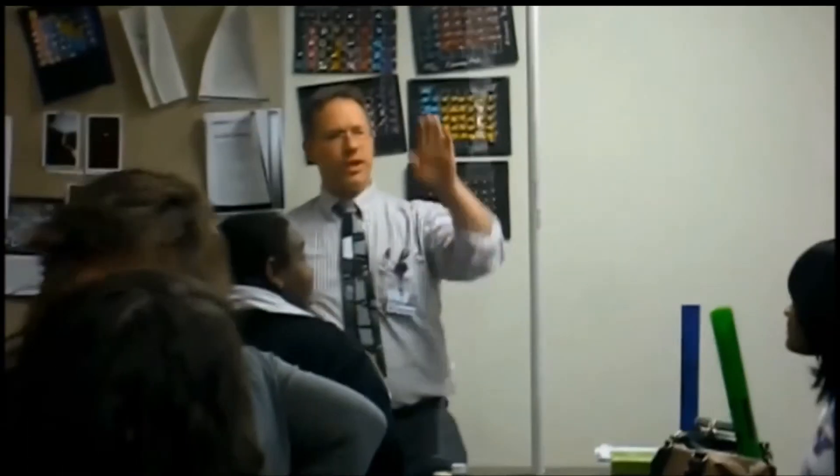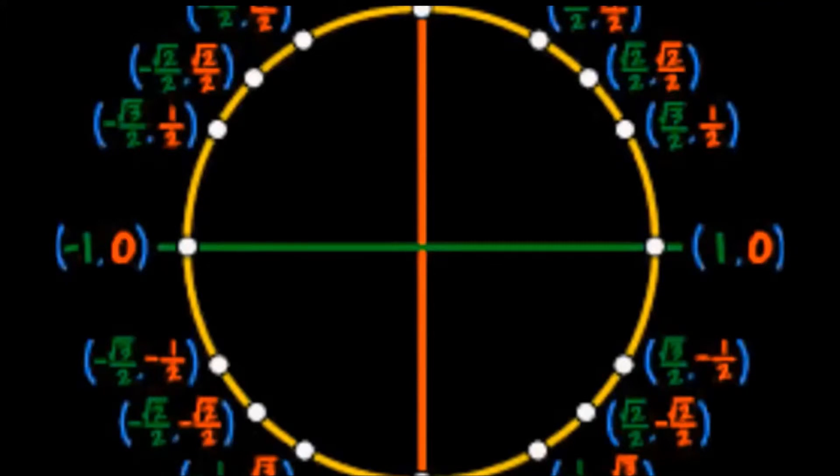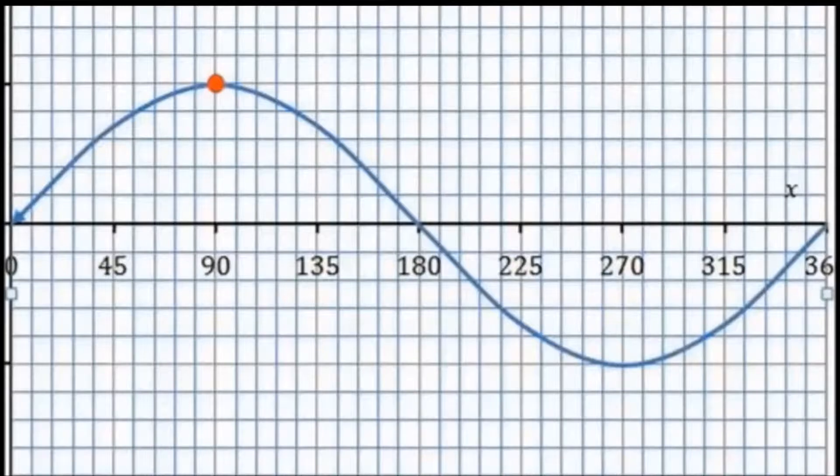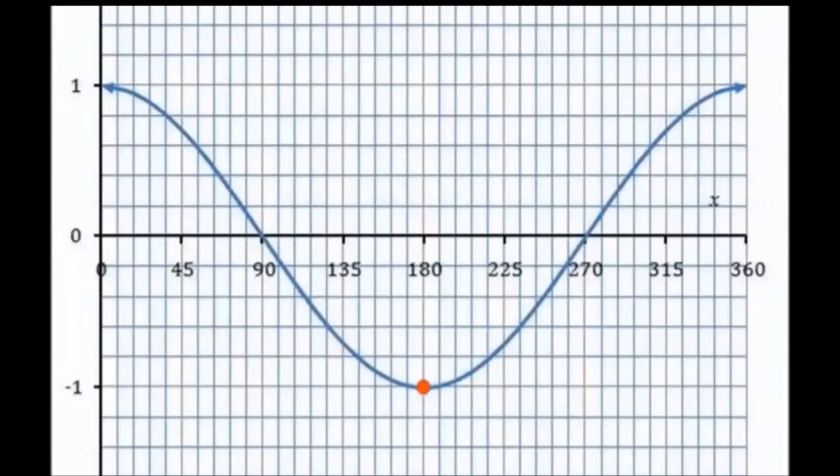The essential question: How was the musical scale created? We generated interest by looking at a wave generator and then mathematically we tied the unit circle into the sine wave and the cosine wave.